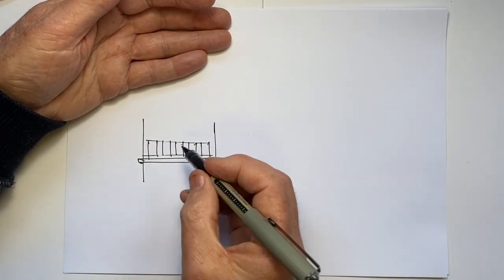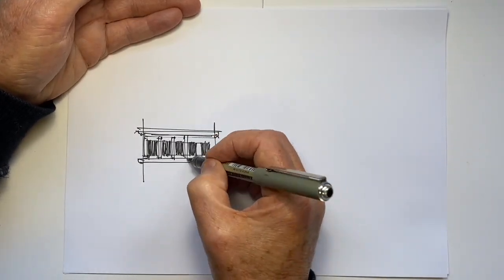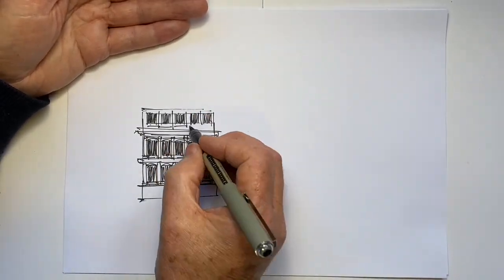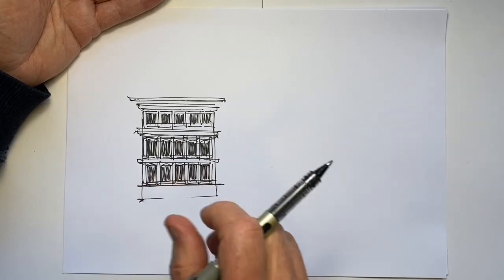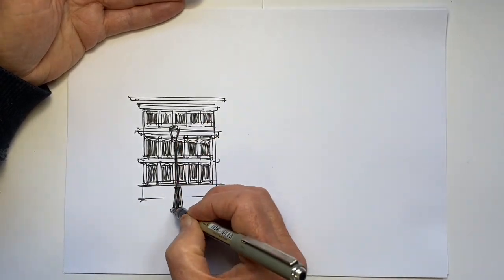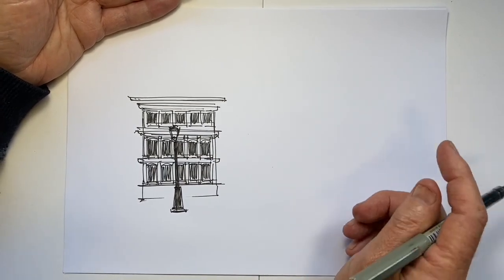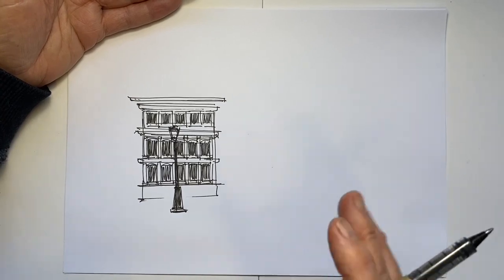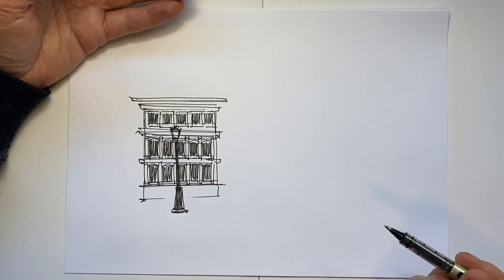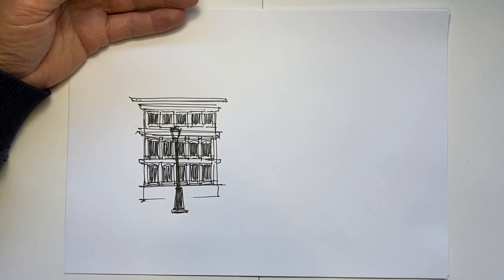My third tip for drawing streetscapes concerns a really common situation that we find ourselves in when we draw. Let me show you. We draw a building. Now in front of this building though we have a lamppost. And it's pretty dark so we figure we can pop it in like this. But I would suggest a better way of constructing this scene, and again it's looking at the order in which we do things, is to draw the lamppost first. Let me show you the difference.